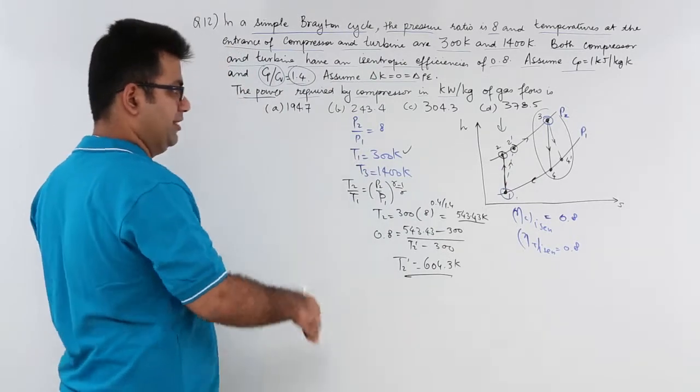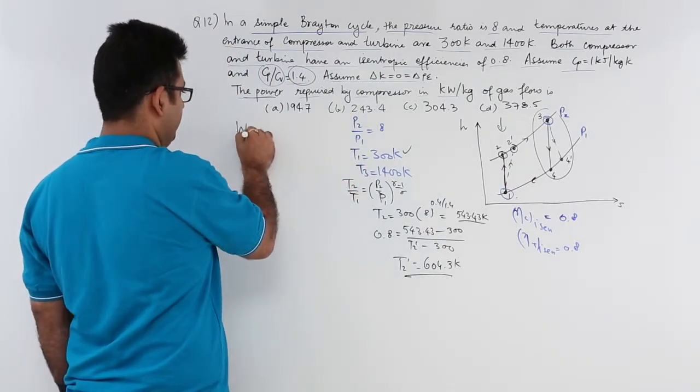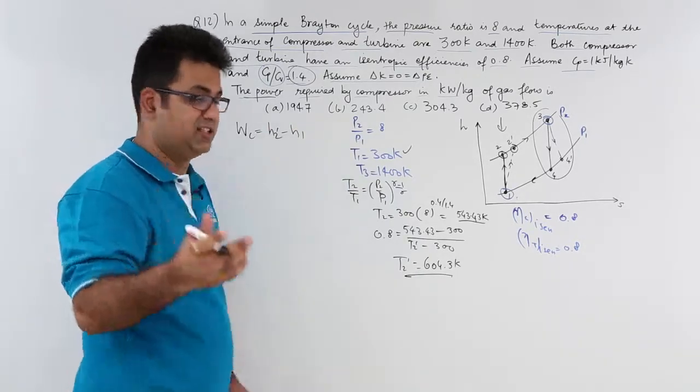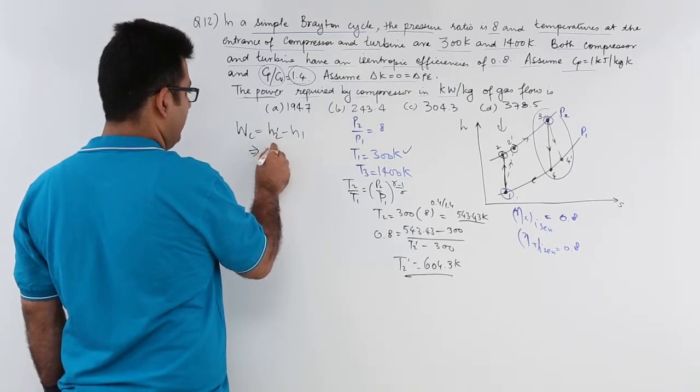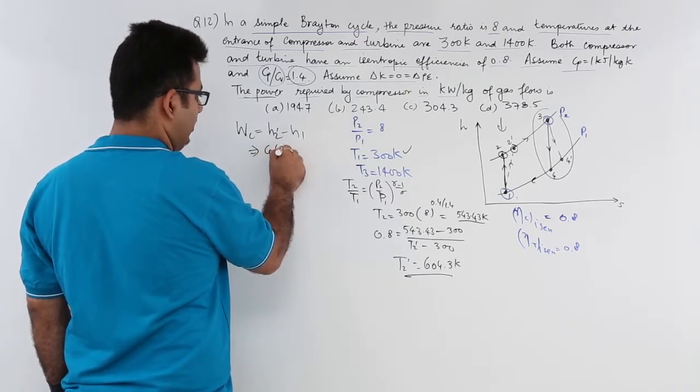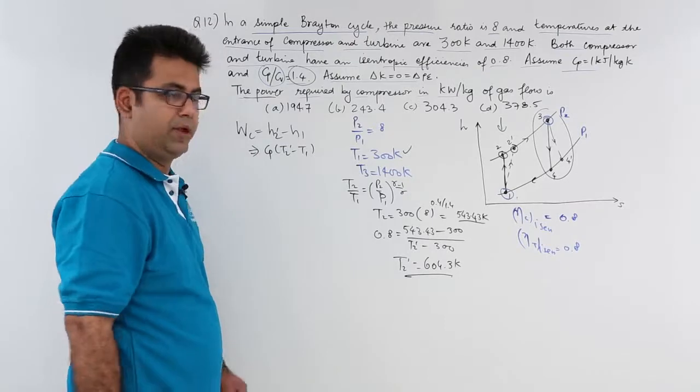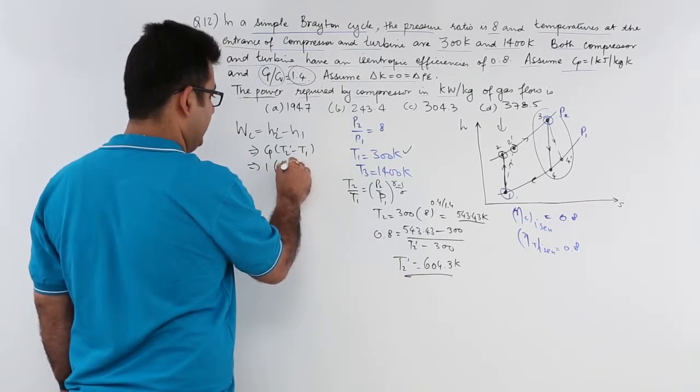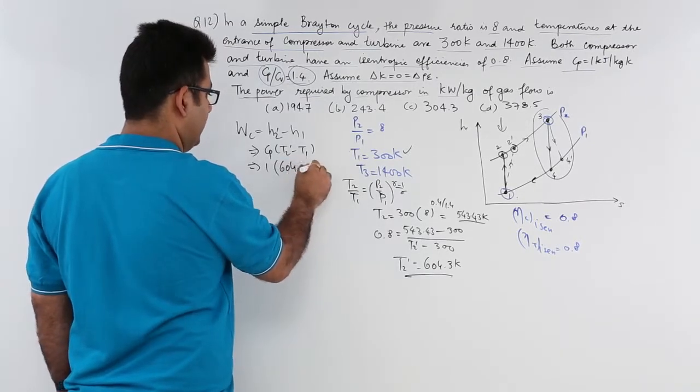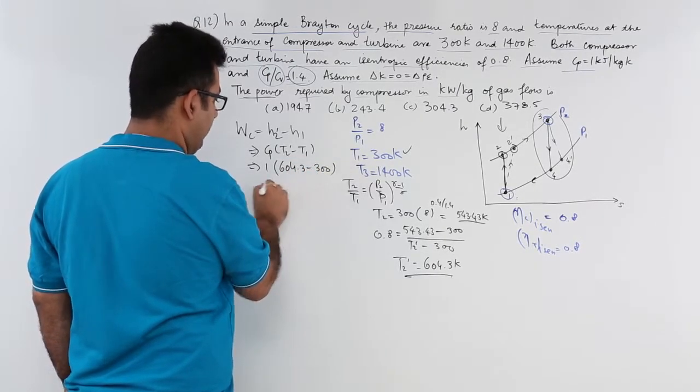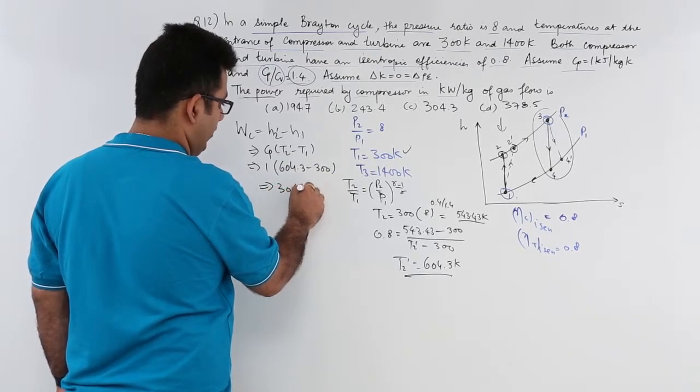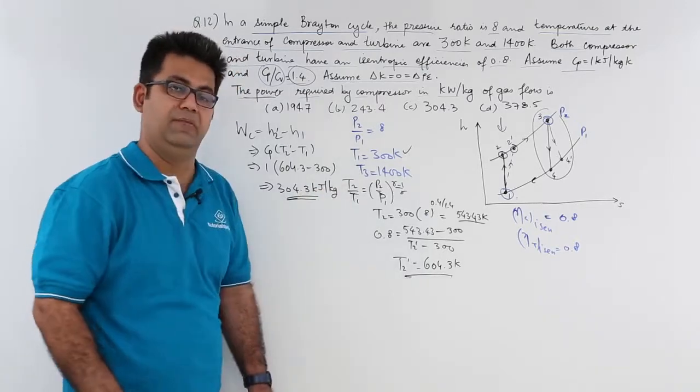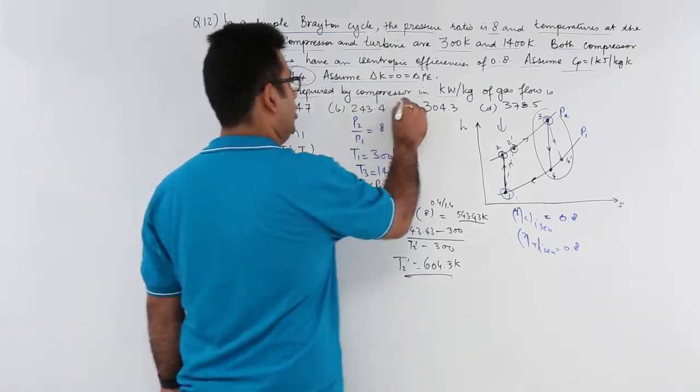So now the compressor work would be H2 minus H1 or rather H2 dash minus H1. So this would be Cp into T2 dash minus T1. And this would leave you with 1 into T2 dash is 604.3 minus 300. That would give you 304.3 kJ per kg of work supplied to the compressor. And this corresponds to option number C.